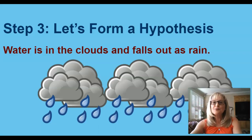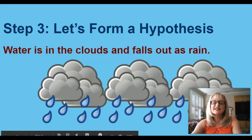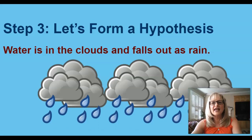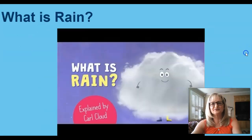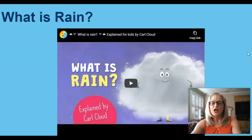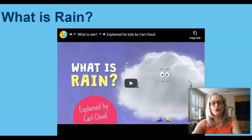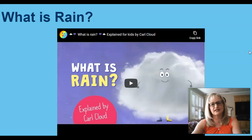Everyone has brainstormed, and we have decided that our hypothesis is that there is water in the clouds, and it falls out as rain. Before we go on to the next step, let's learn more about rain from Carl Cloud. He will be using another important vocabulary word: particles.